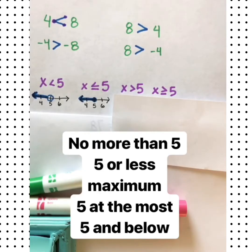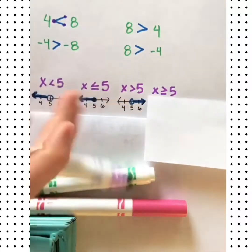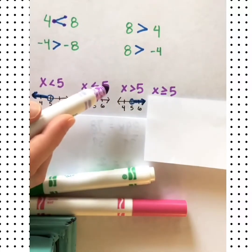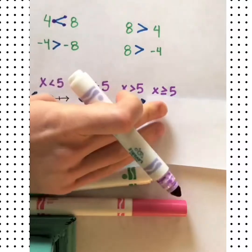For x greater than 5, we'll do an open circle and shade to the right. This lets everyone know that all values greater than 5 are solutions to this inequality.